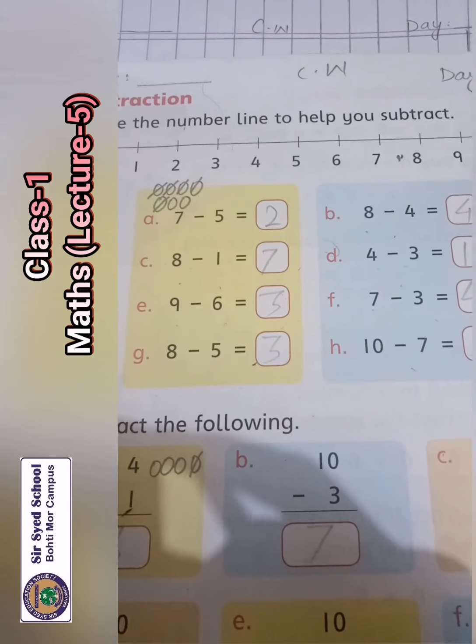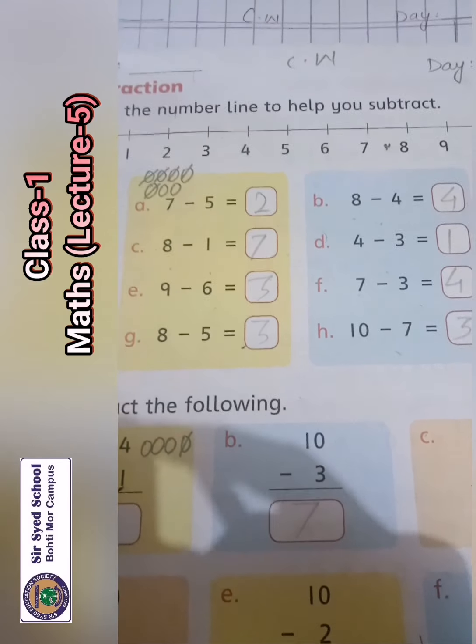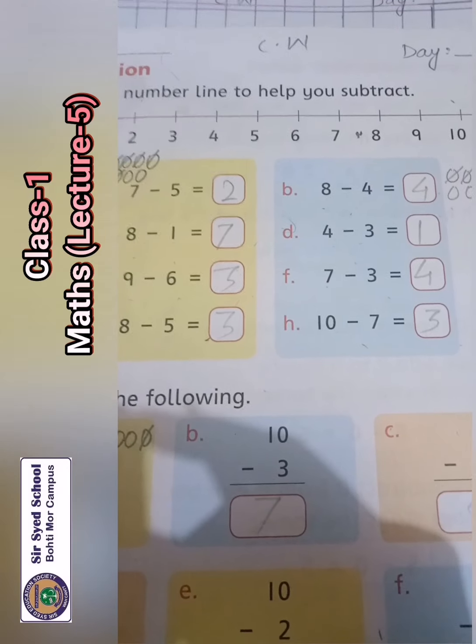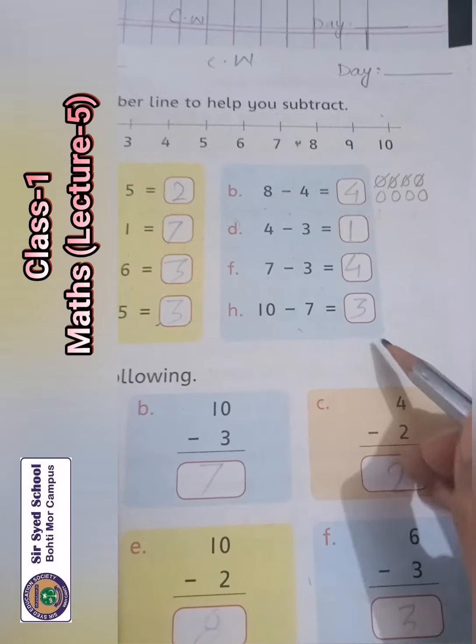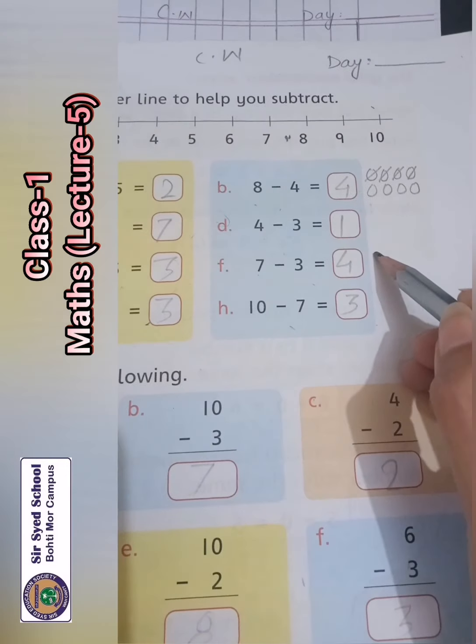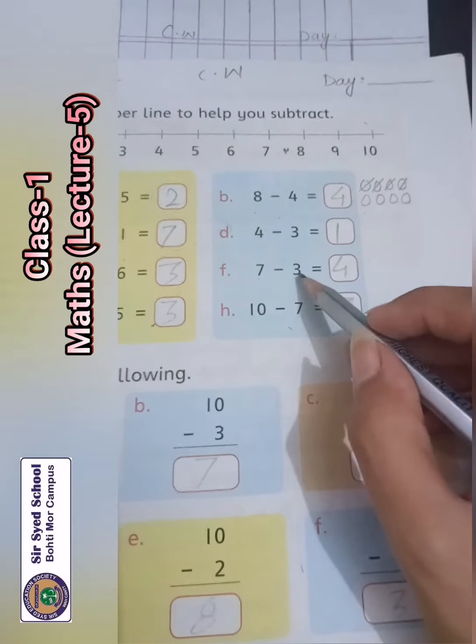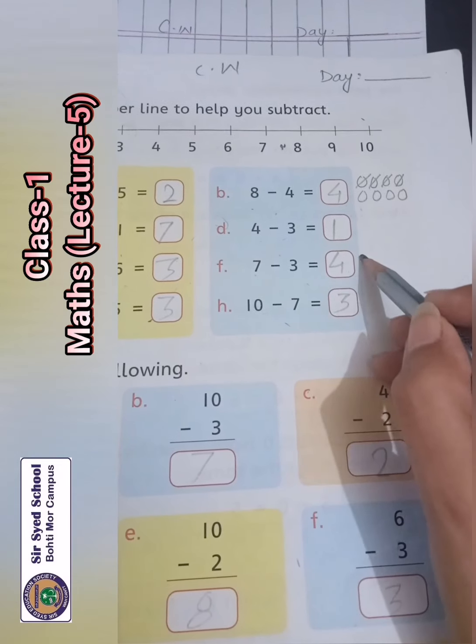9 minus 6, 9 balls and cut. My answer is 4.